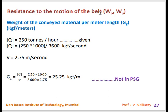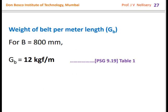Next, we find the resistance to motion. First, gg (weight of conveyed material per meter length) = design capacity / velocity. Converting 250 tons/hour to kgf/s and dividing by velocity gives gg ≈ 25.25 kgf/m. From PSG 9.19 Table 1, for belt width 800 mm, the belt weight per meter length gb = 12 kgf/m.